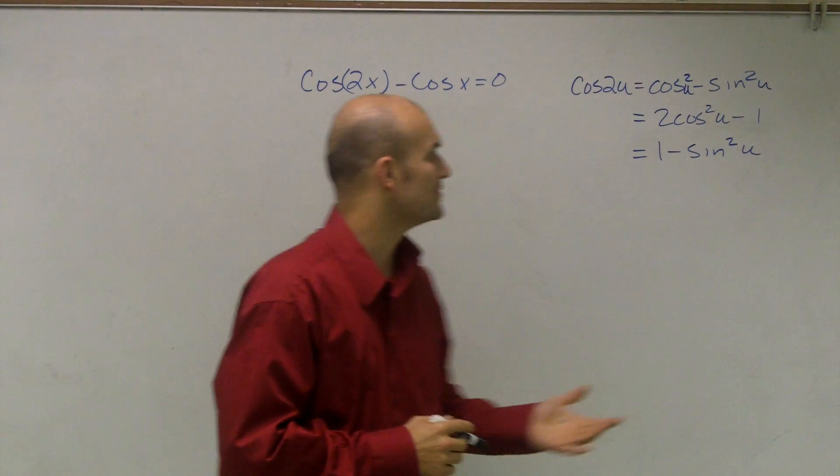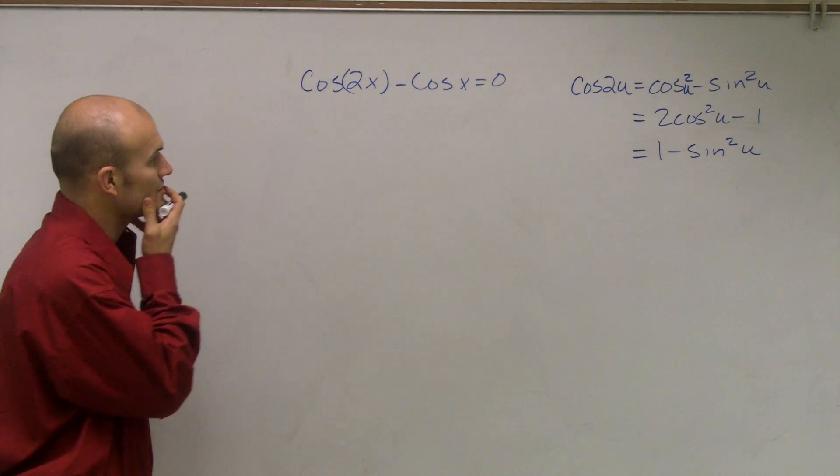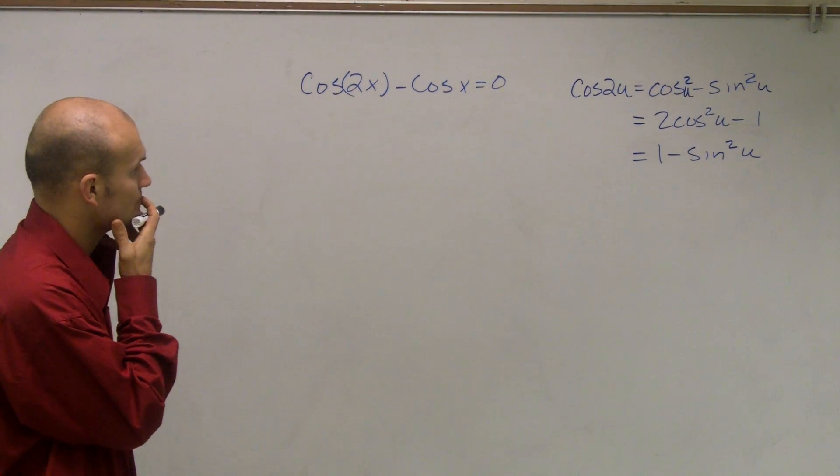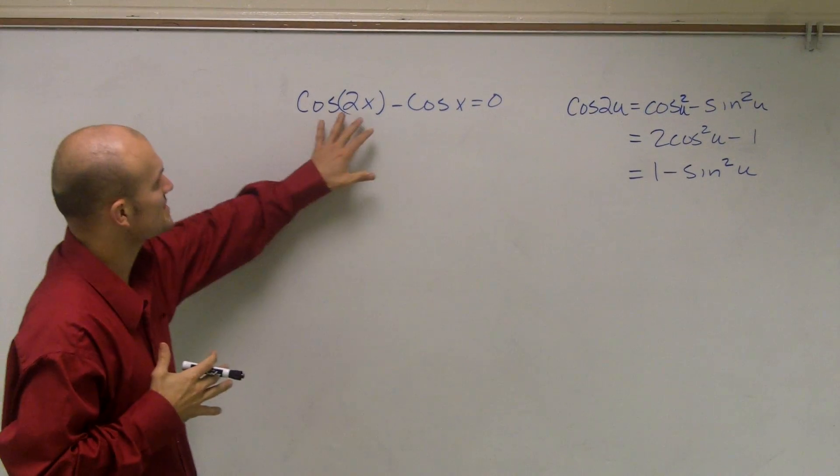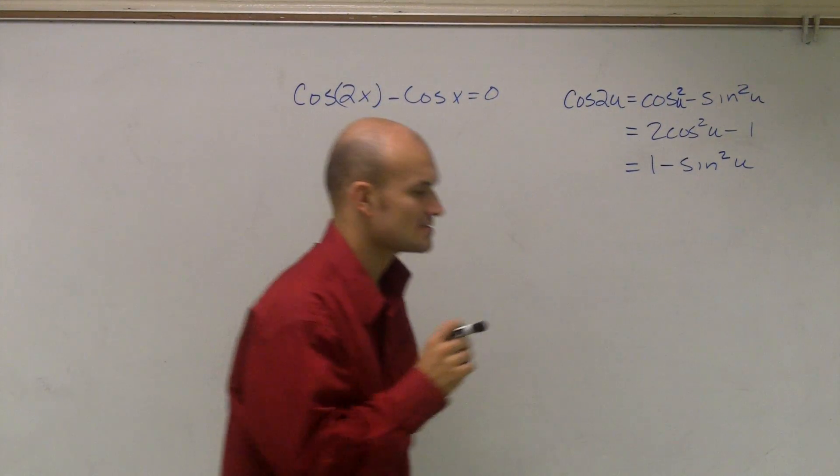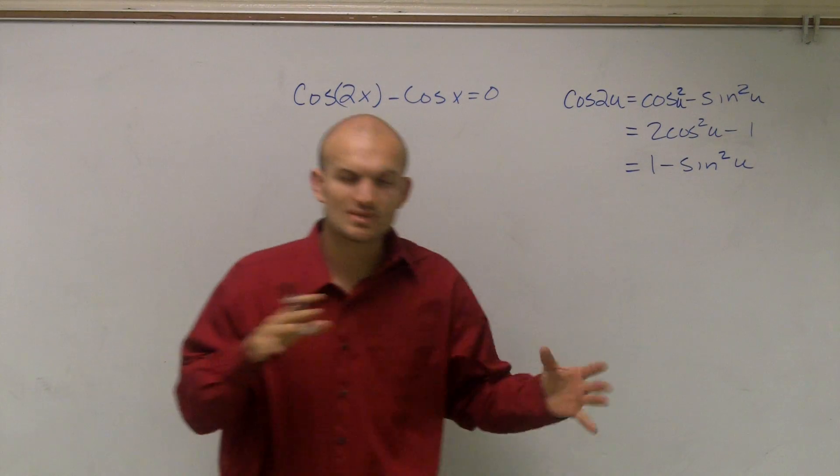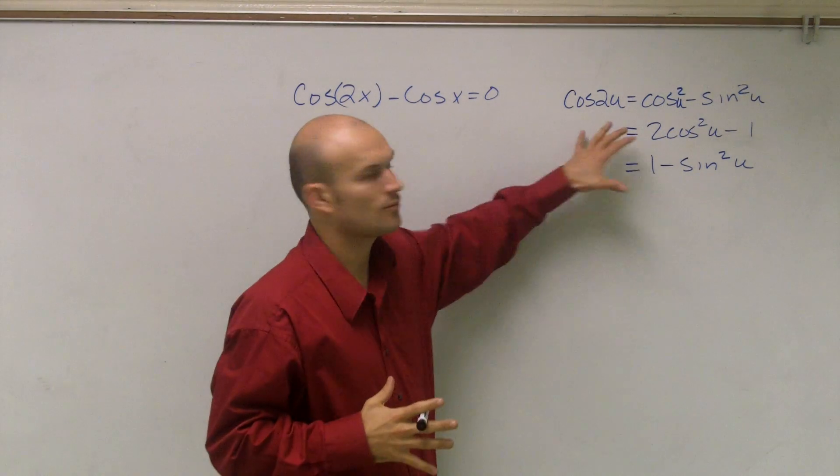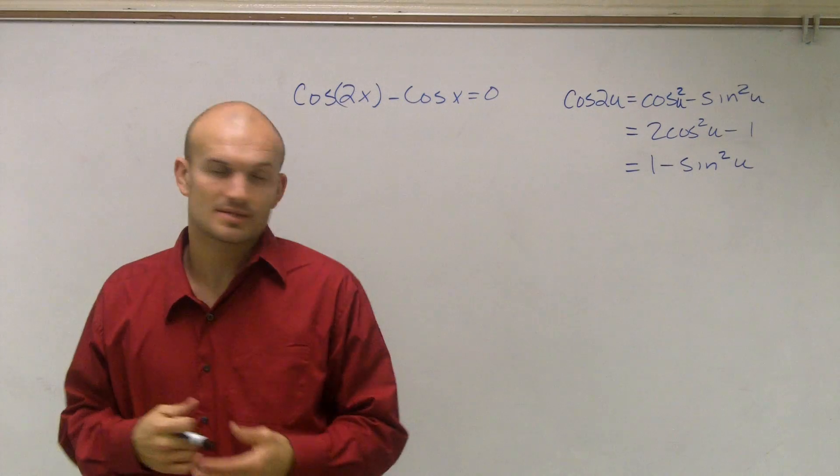All right, welcome. What I'd like to do is show you how to solve this equation here. The important thing you notice is we have a cosine of 2x and also a cosine of x. So when solving a problem like this, what I'm going to have to use is my double angle formula.